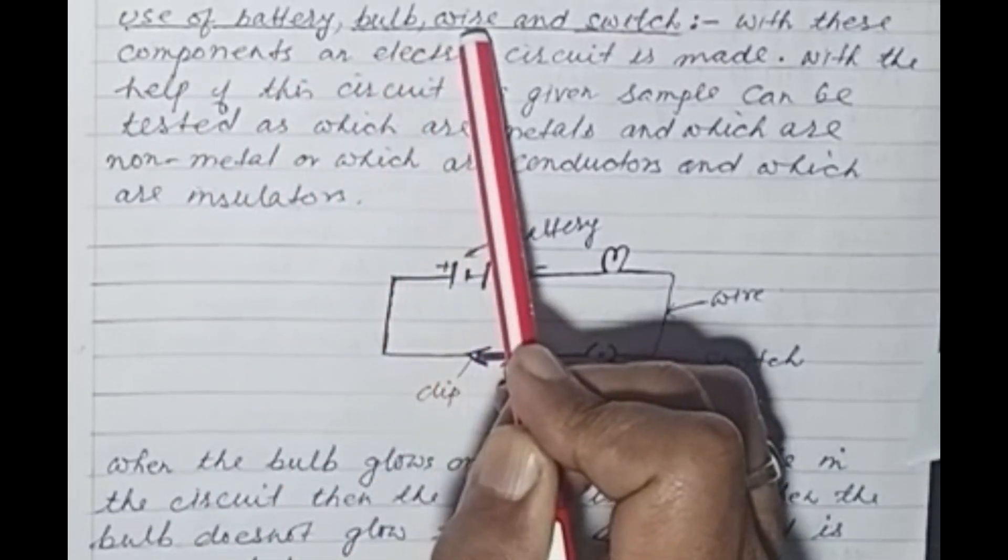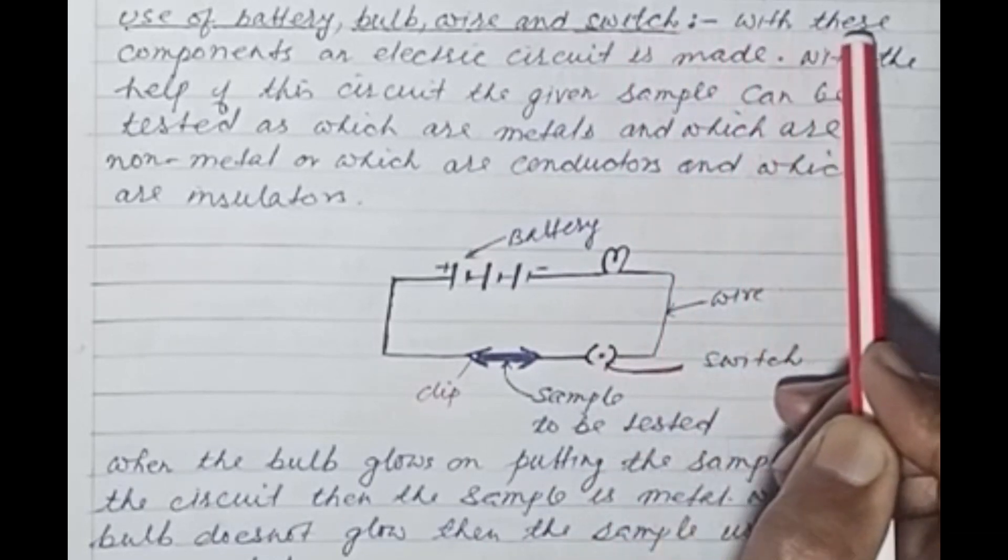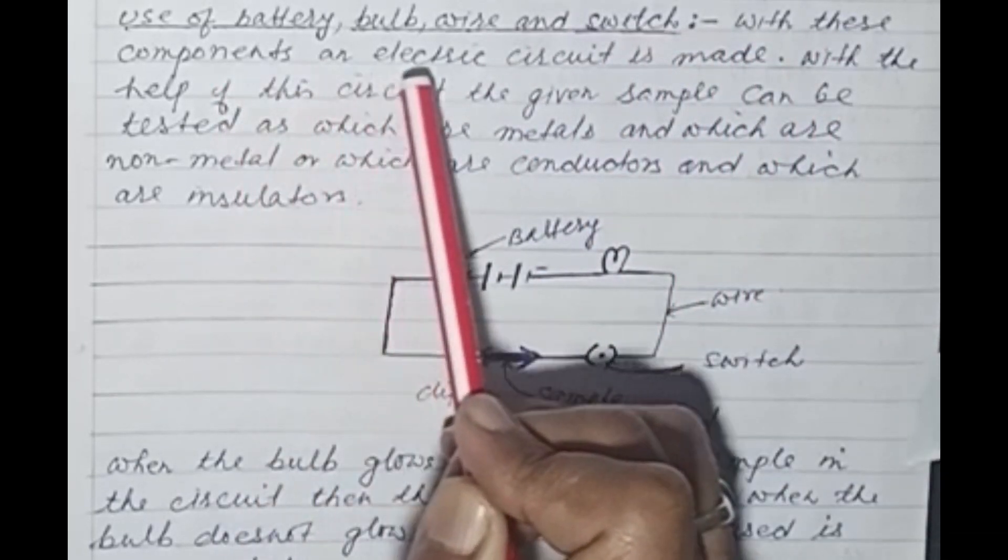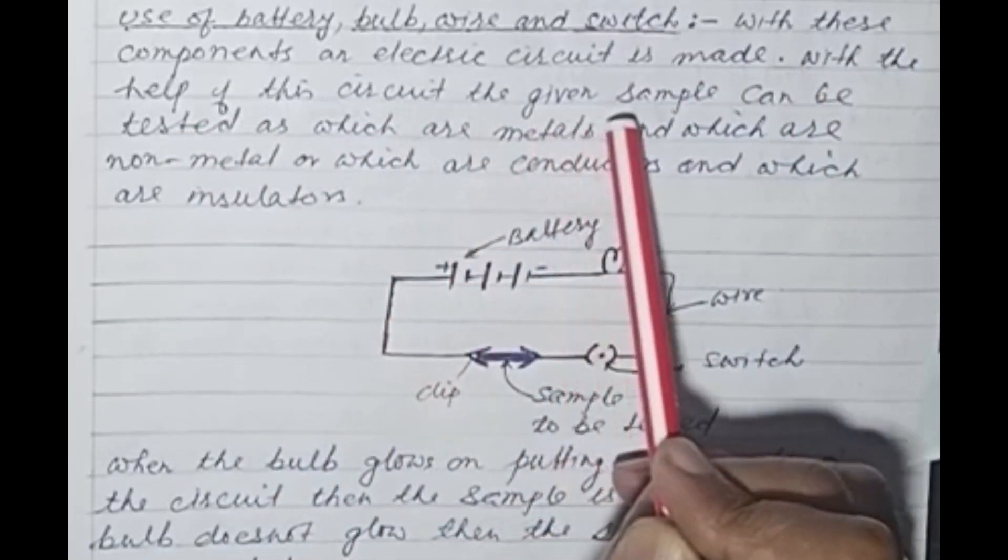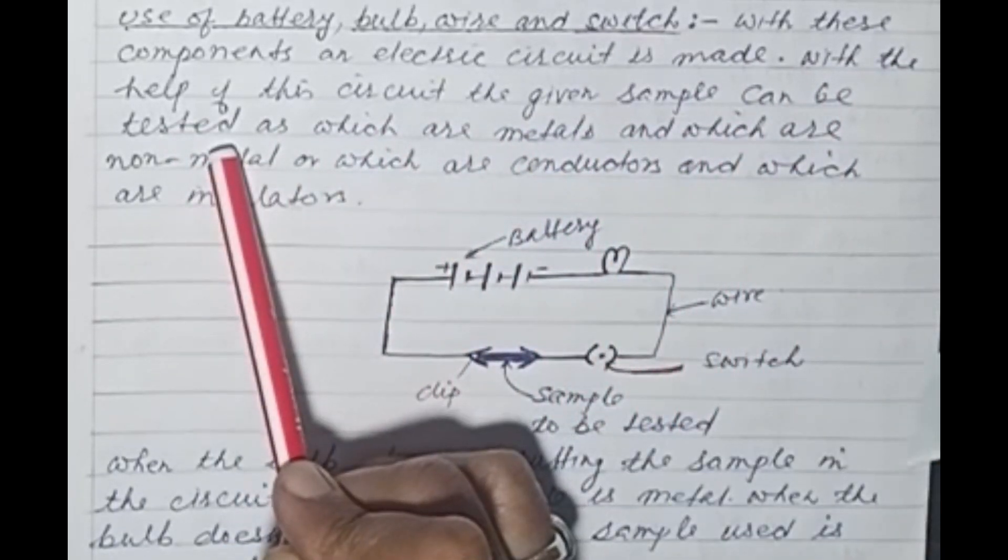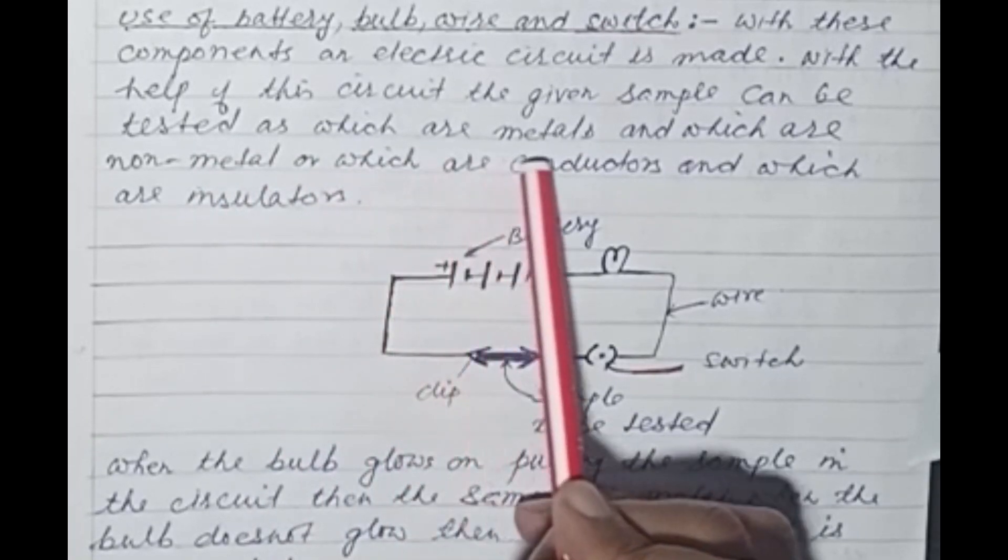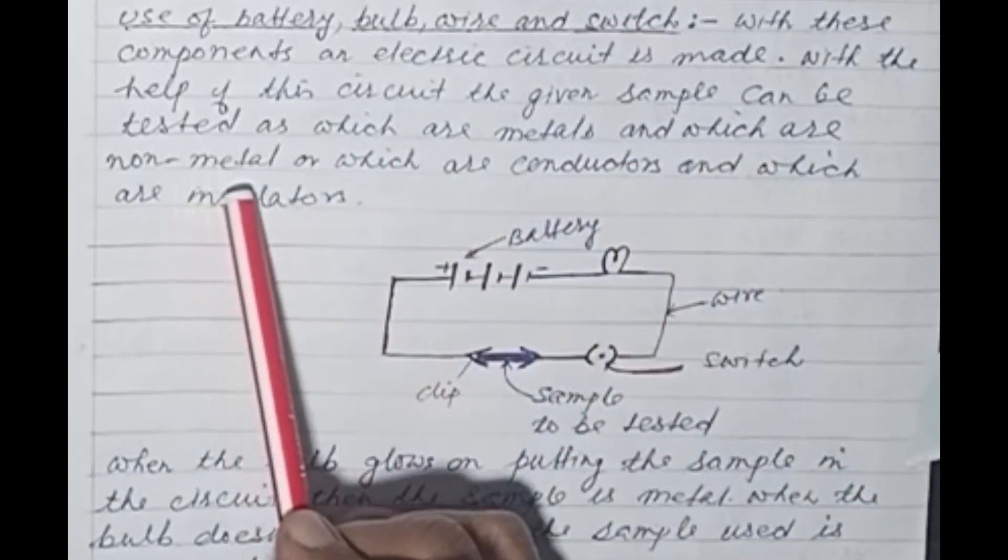Use of battery, bulb, wire and switch: With these components, an electric circuit is made. With the help of this circuit, the given sample can be tested as which are metals and which are non-metals, or which are conductors and which are insulators.